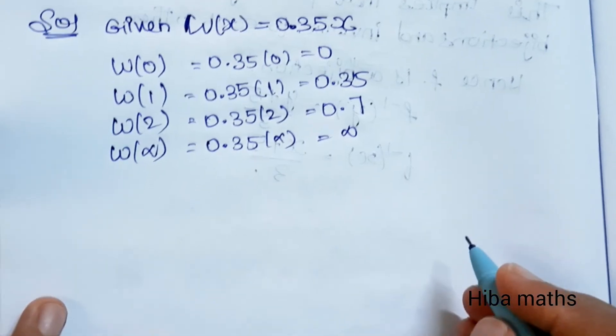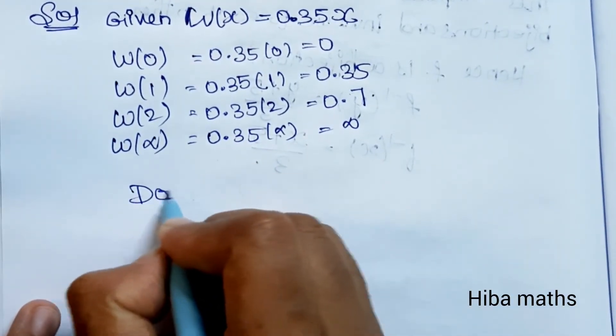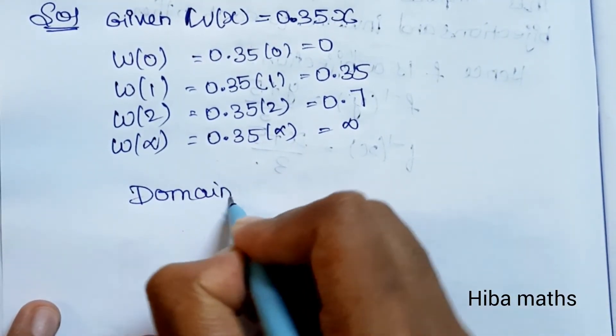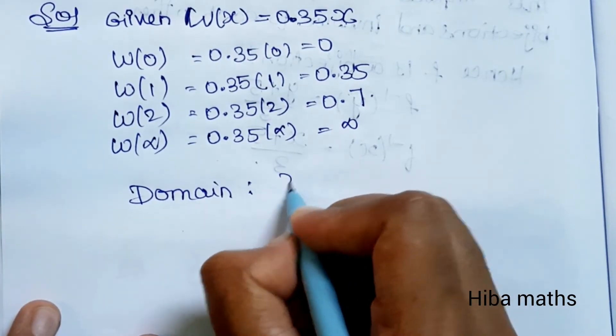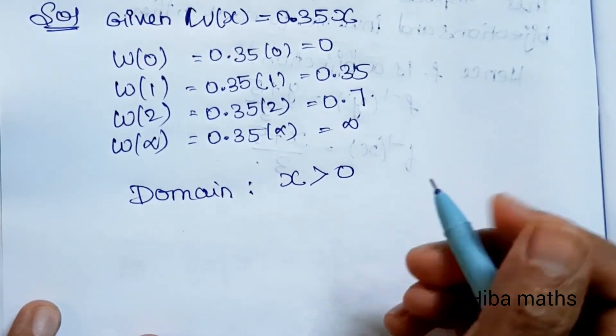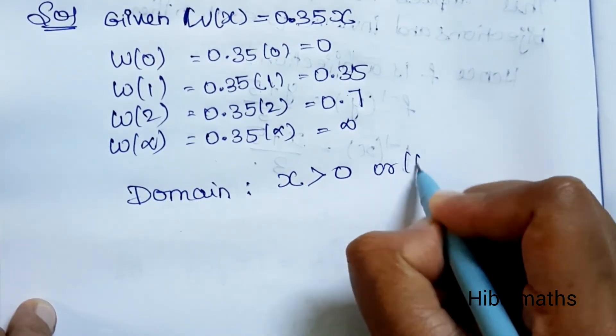So the domain of the function is x > 0, or [0, infinity).